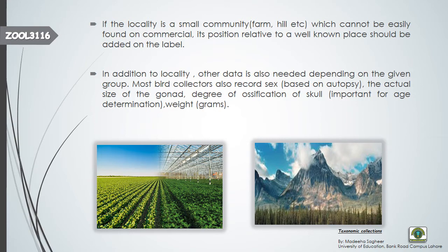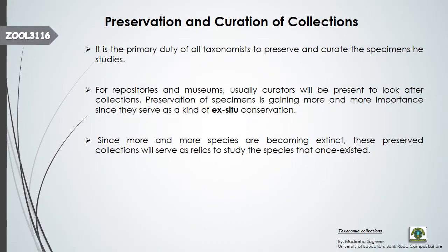In addition to locality, other data is also needed on the label. For plants, taxonomists record the sex of the specimen and measure the actual size of the gonads or reproductive organs. The degree of ossification of the skull is also recorded, which helps determine the age of the specimen since ossification involves remodeling of bones by osteoblasts. Weight should also be mentioned in grams.